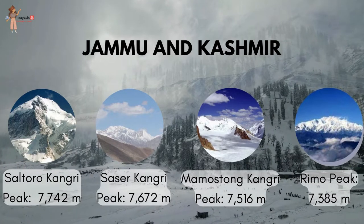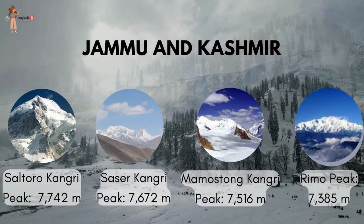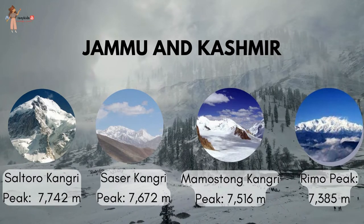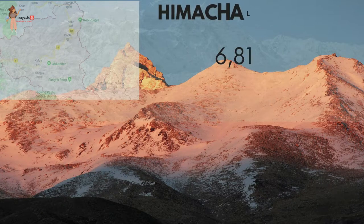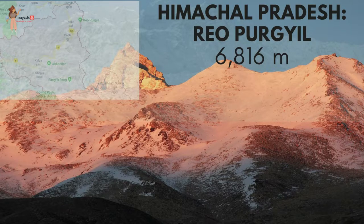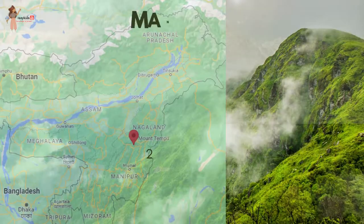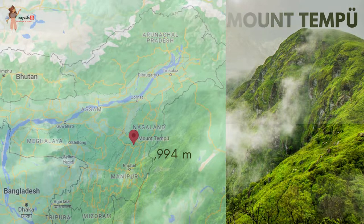Peaks in Jammu and Kashmir include Saltoro Kangri, Sasehkangri, Mamostong Kangri and Rimu peak. Rio Pargil is located at the border between Himachal Pradesh and Tibet. Mount Tempu is a peak of the Barail Range rising at the mountainous border of Manipur and Nagaland.